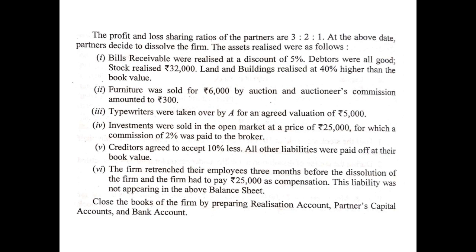On the credit side of the realization account: by bank account (furniture realized) 5,700. The same is written on the debit side of the bank account as well. Point three: typewriters were taken over by A for an agreed valuation of 5,000. This is an asset taken over by a partner. Whether the asset is sold or taken away by the partner, it is shown on the credit side of the realization account: by A's capital account 5,000. And it will also be shown on the debit side of A's capital account: to realization (typewriter taken) 5,000.